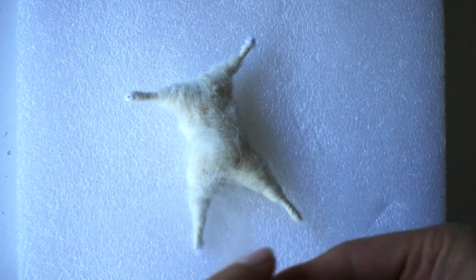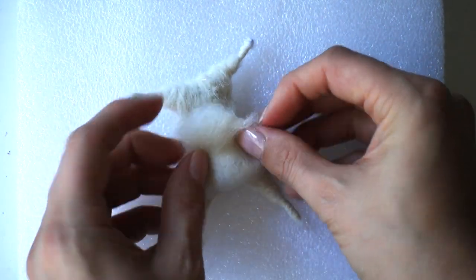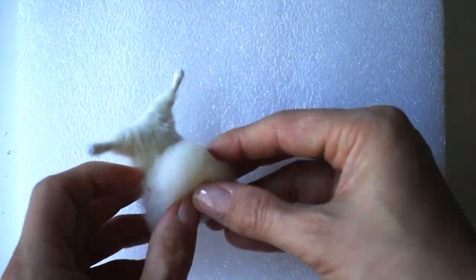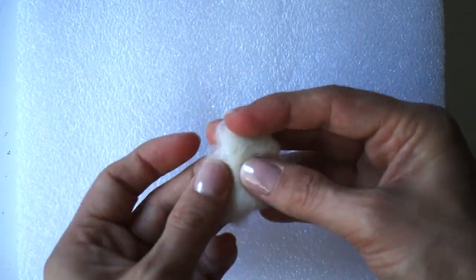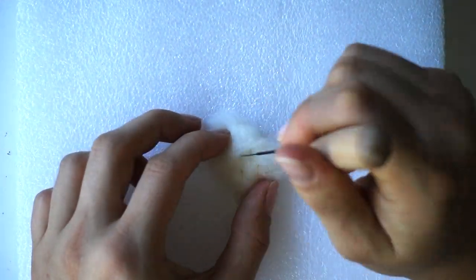When the body feels pretty firm and substantial, I'm going to take a little piece of wool and add a tummy to the mouse. First, stab the piece of wool with the needle to add some firmness and then attach it to the body.